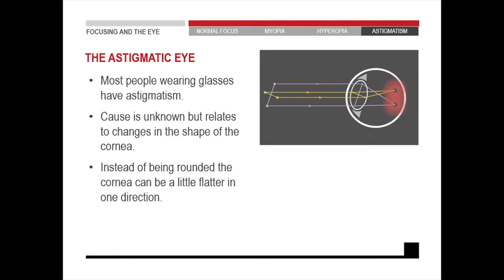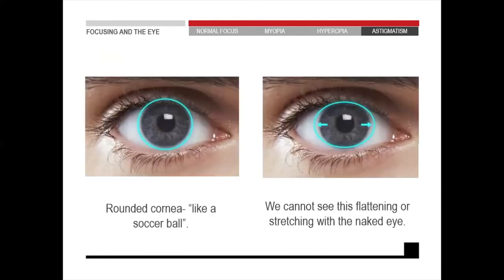The cause is unknown, but we know it happens because the cornea is flattened in one direction and steeper in the other direction. So instead of being round like a soccer ball, it is shaped like a rugby ball. If you take a rugby ball and draw a line from one point to the other, you can see it sits at a certain axis — and that is what astigmatism is.